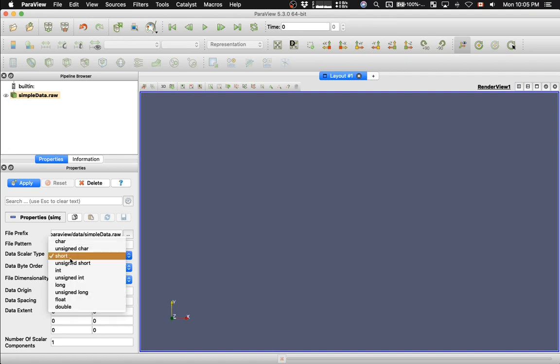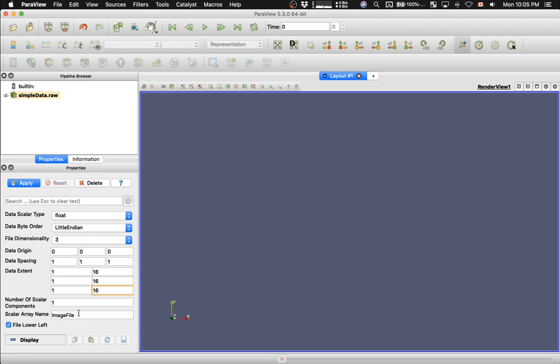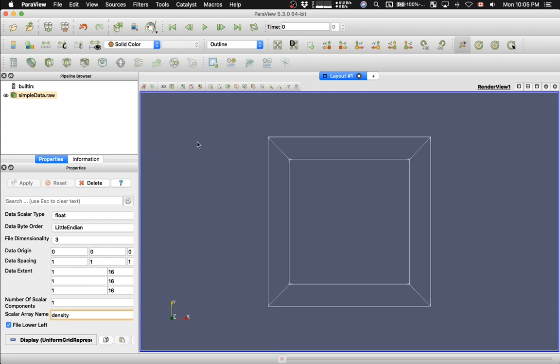So the data type is float. That means single precision floating number. Order of bytes in a number is little endian. It's a three-dimensional variable. And then data extent is 1 to 16 in each dimension. Number of scalar components is 1. And then the name of the variable, I'm going to call it density. So now I hit Apply, and the file was read.